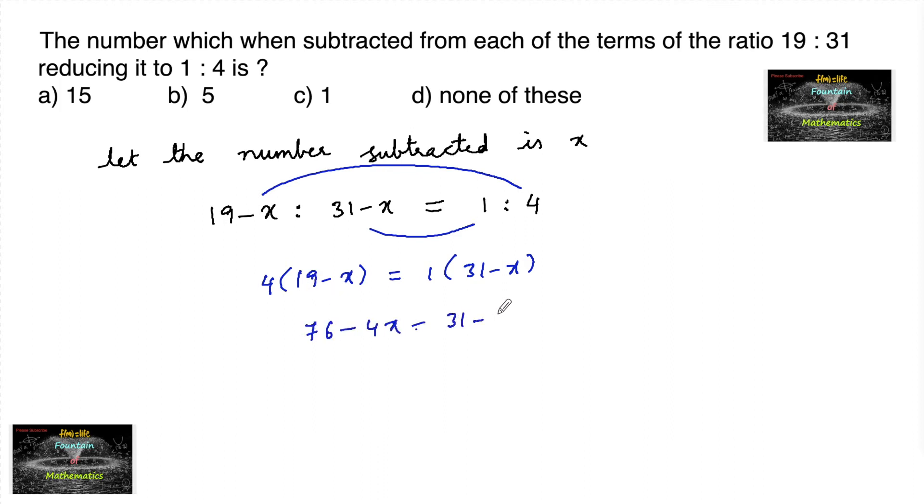which is equal to 31 minus x. We can rearrange: 76 minus 31 equals 4x minus x, so that is 45 equals 3x, or x equals 45 by 3.